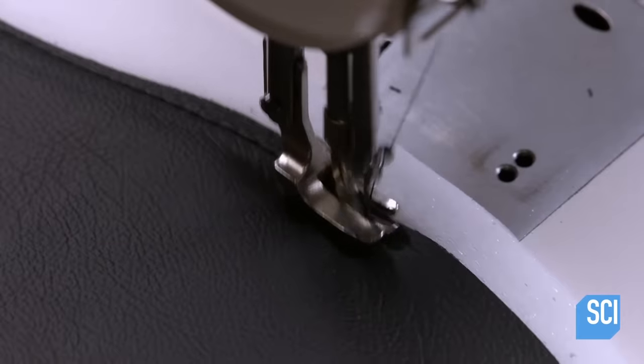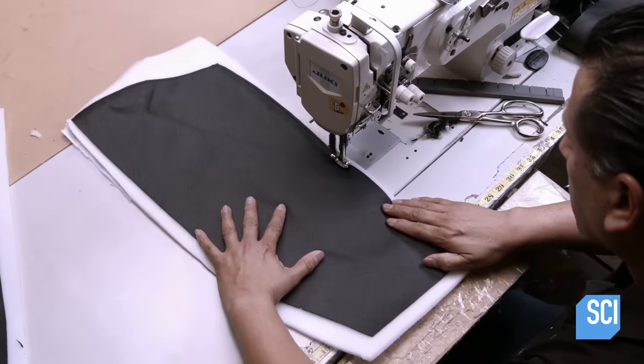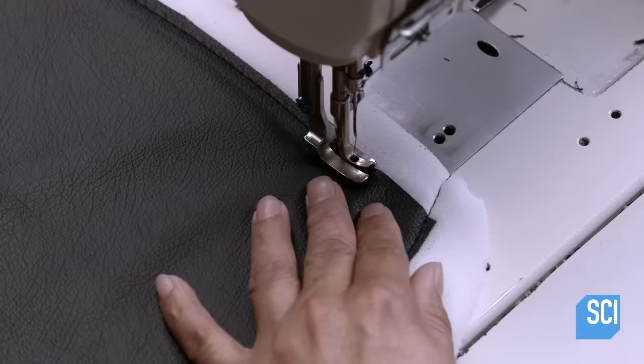He stitches the padding flat to many of the other pattern pieces. This particular part is a side panel for the back of the chair.